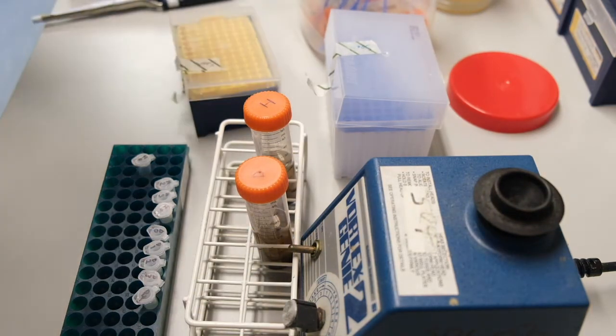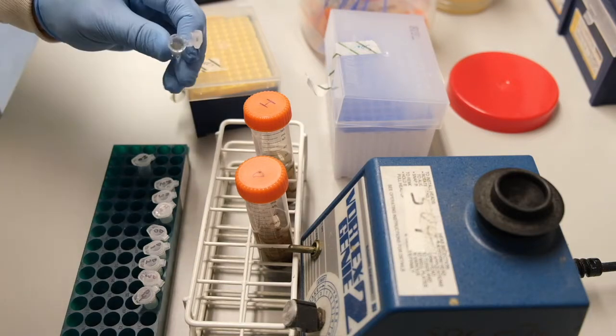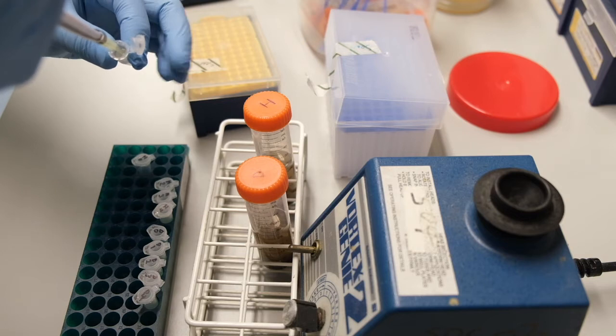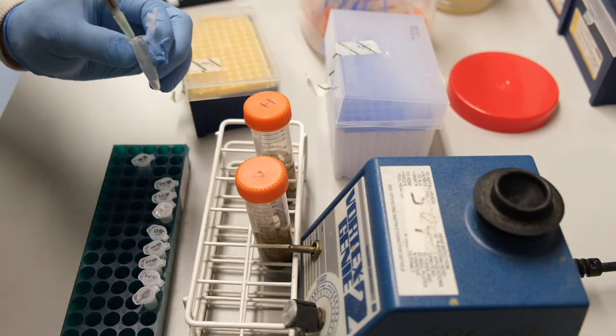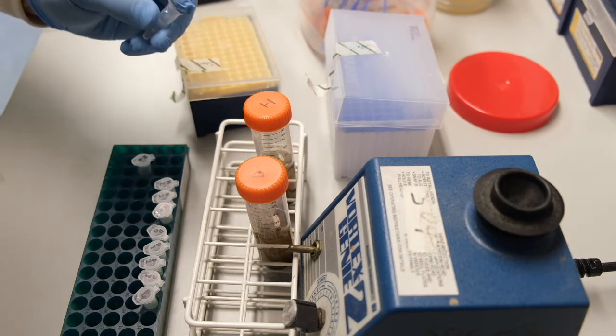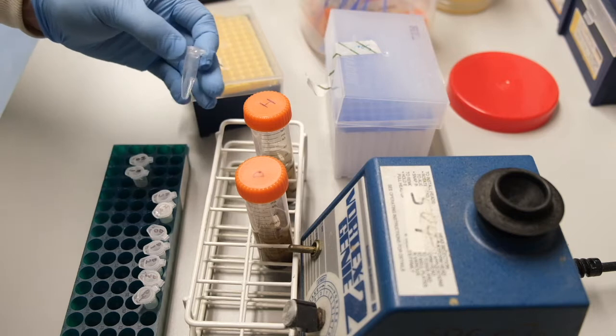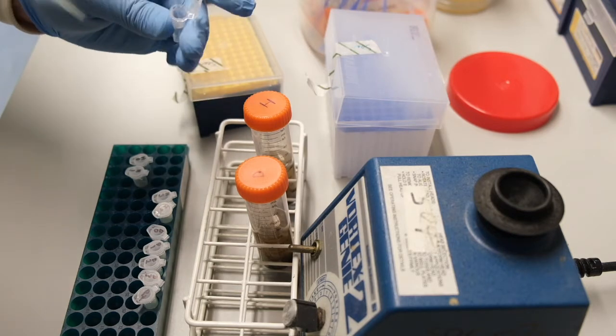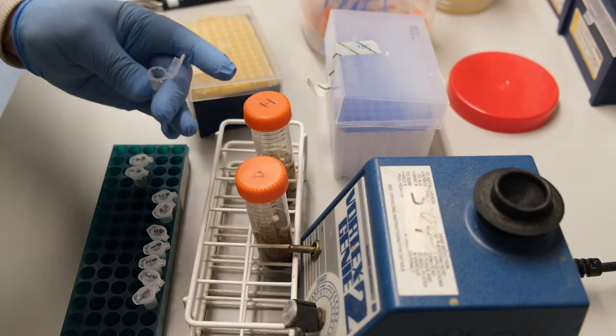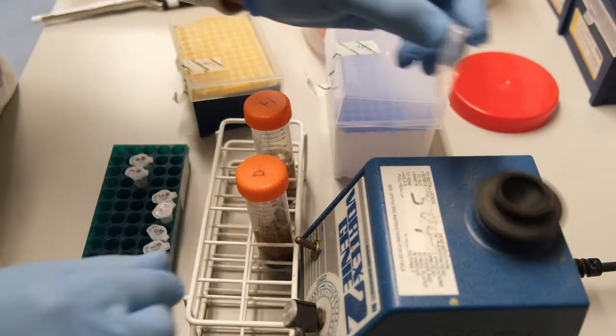We can now add 100 microliters of this 10 to the minus 1 dilution to 900 microliters of 10 to the minus 2 dilution. Again, we vortex to mix thoroughly.